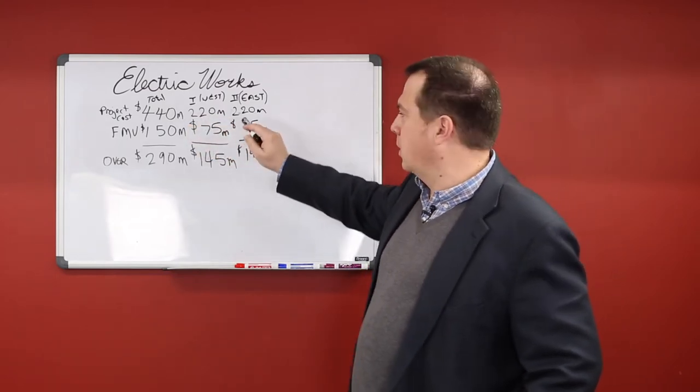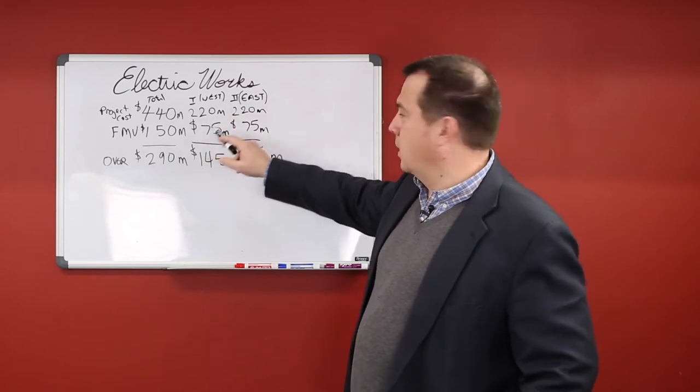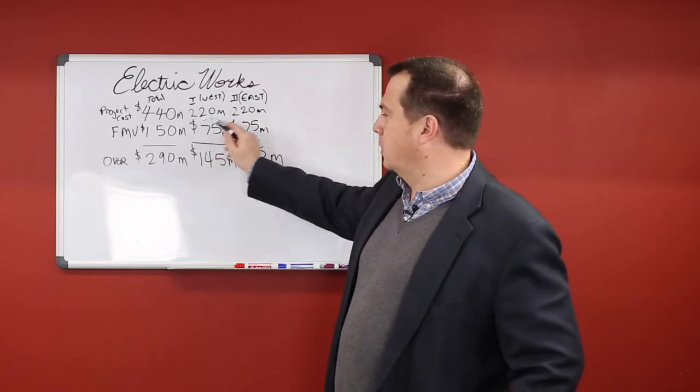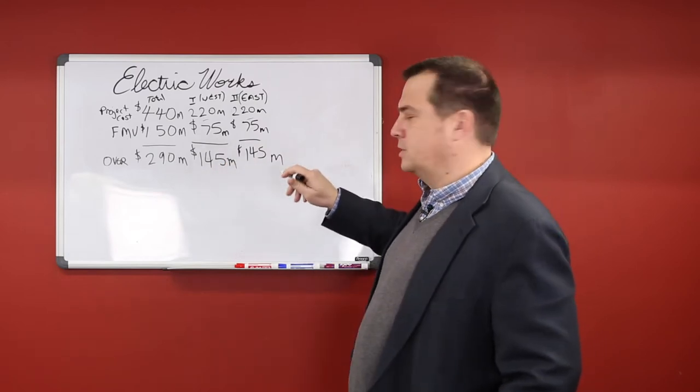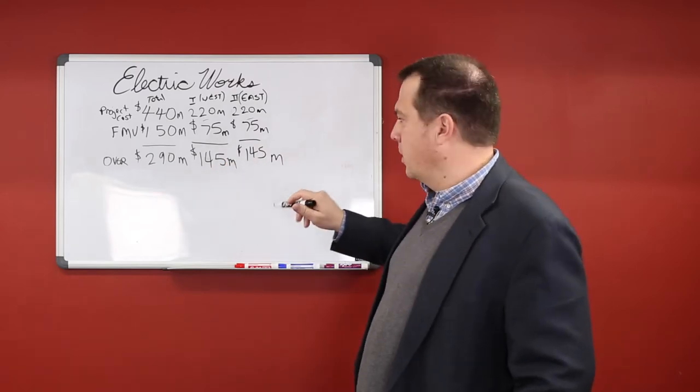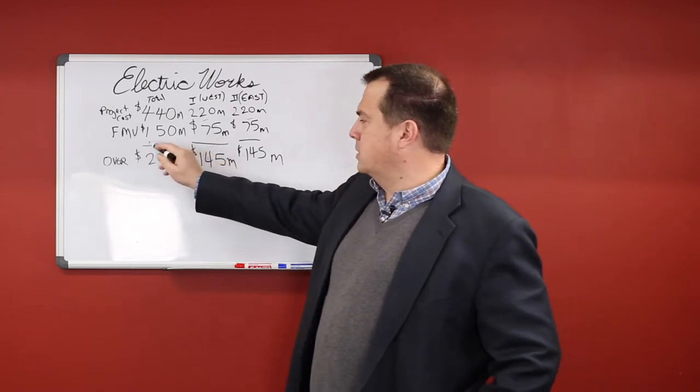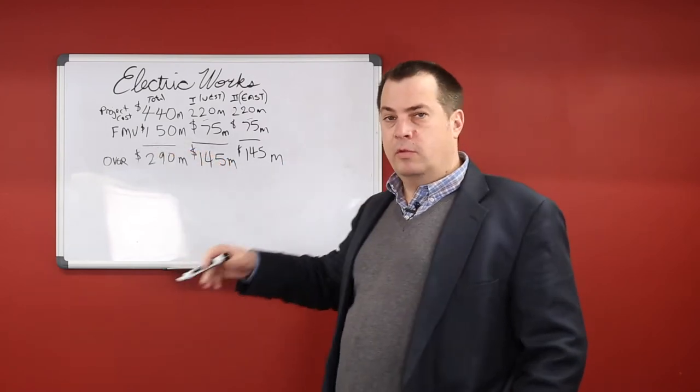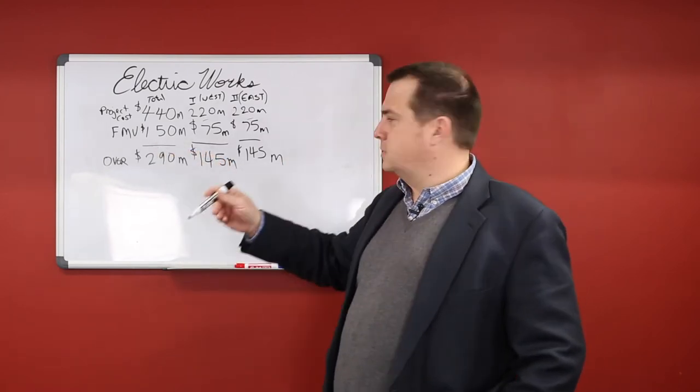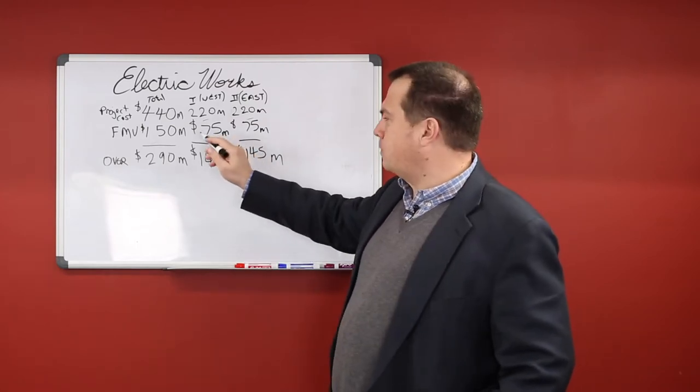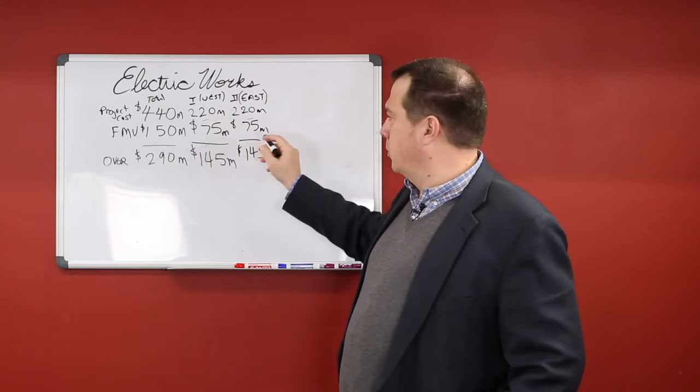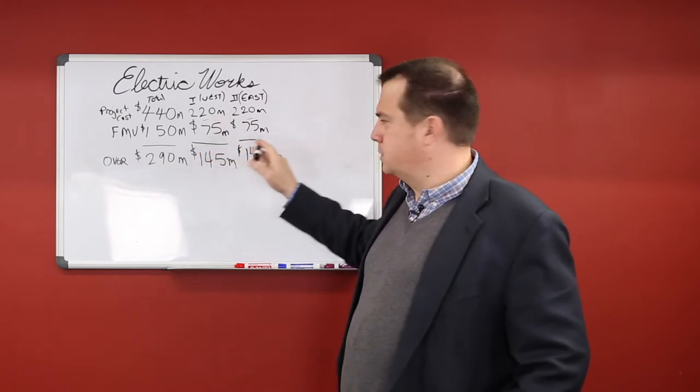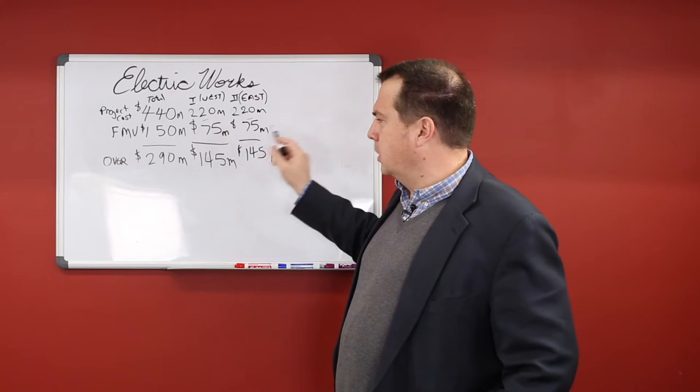So there's two phases. There's the west side of the street and the east side of the street that are roughly the same $220 million project costs that the developer is estimating. And that also means that the fair market value that we derived, and we went through the discount rate and all that stuff in other videos, that is also split evenly between the two parcels.